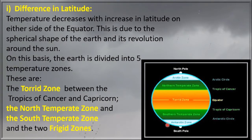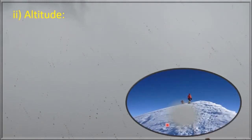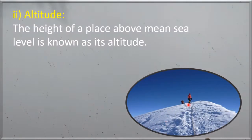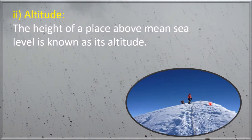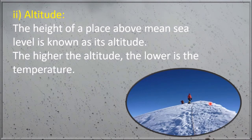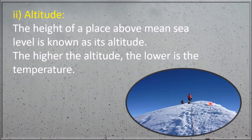The second factor that influences the distribution of temperature across the world is altitude. The height of a place above mean sea level is known as its altitude. The higher the altitude, the lower the temperature.